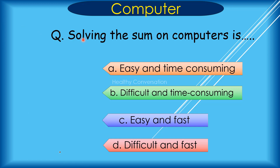Question: Solving a sum on a computer is dash. A. Easy and time consuming, B. Difficult and time consuming, C. Easy and fast, D. Difficult and fast. Correct answer is C. Easy and fast.